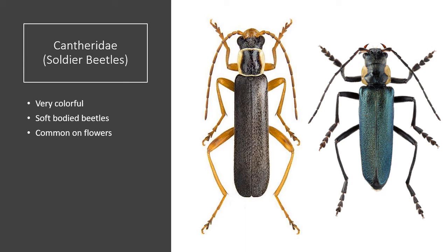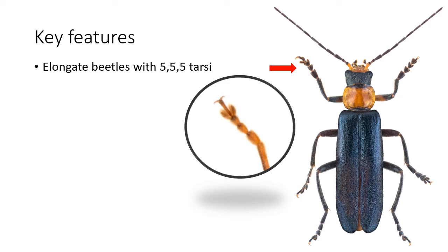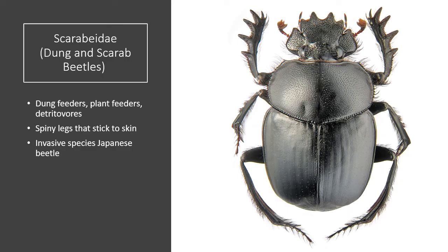Soldier beetles are another very colorful family of beetles, and they're unique in that they're soft-bodied, and they are also common on flowers. They are cosmopolitan in distribution. One of the first described species has a color pattern reminiscent of the red coats of early British soldiers, hence the common name. Some of the key features to identify soldier beetles include their elongate body plan and their 5-5-5 tarsal formula. They have straight filiform antennae, and they're soft-bodied and slightly rectangular in shape.